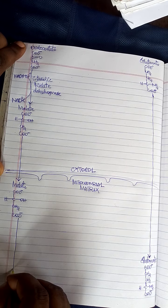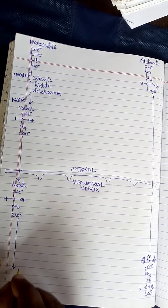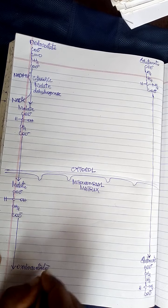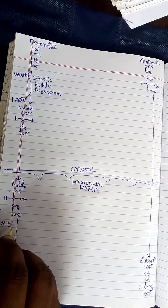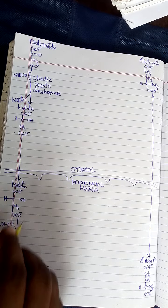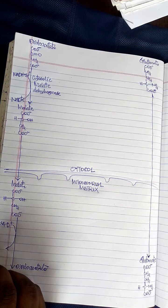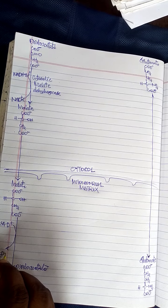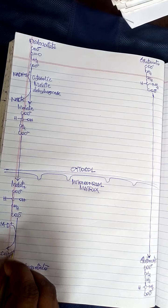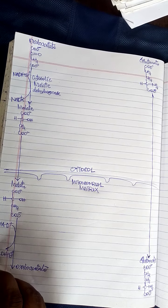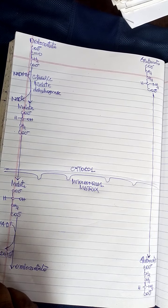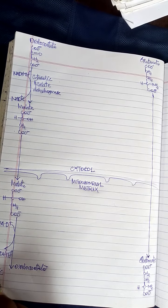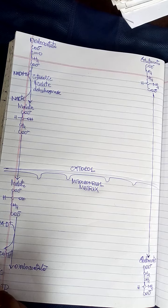Inside the mitochondrial matrix, malate is going to be oxidized again into oxaloacetate by using NAD+, which removes the hydrogens to form NADH + H+. This NADH goes directly to the electron transport chain so as to contribute to the formation of 3 ATP molecules.